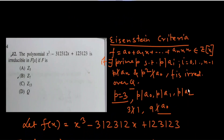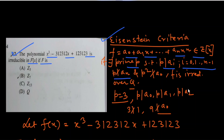The first question says that the polynomial x³ - 3x + √(1/2)·x + √(1/2·3) is irreducible in f(x) if... This is a direct question based on the Eisenstein criteria of irreducibility test. The Eisenstein criteria says that if f = a₀ + a₁x + ... + aₙxⁿ belongs to Z[x], then there exists a prime p such that p divides aᵢ for i from 0 to n-1, p does not divide aₙ (the leading coefficient), and p² does not divide a₀ (the constant term). Then f is irreducible over Q.